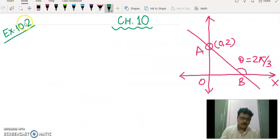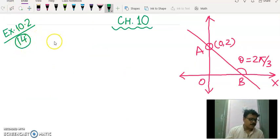Now coming to question number 14 of exercise 10.2. It says find the equation of a line through 0 comma 2 making an angle of 2 pi by 3 with the positive x-axis. We have to find the equation of line AB which is passing through 0 comma 2 and making an angle of 2 pi by 3 or you can say 120 degree.